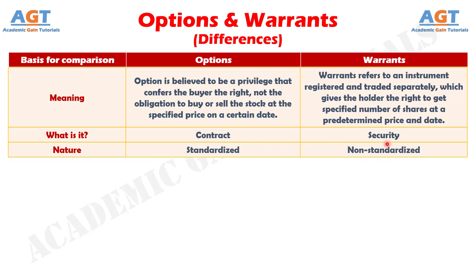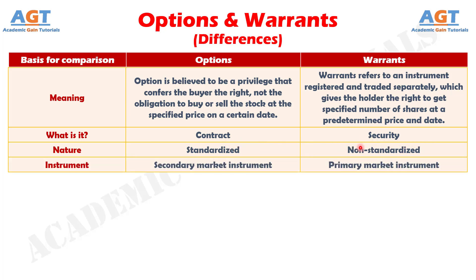Number 4: a stock option is a secondary market instrument, as the trading takes place between investors. Unlike an option, a stock warrant is a primary market instrument, as the company itself issues warrants.